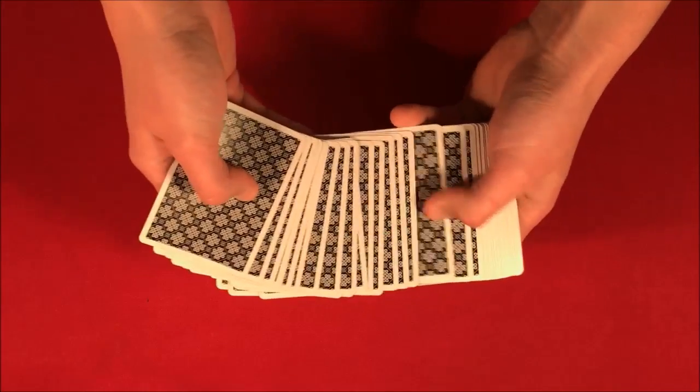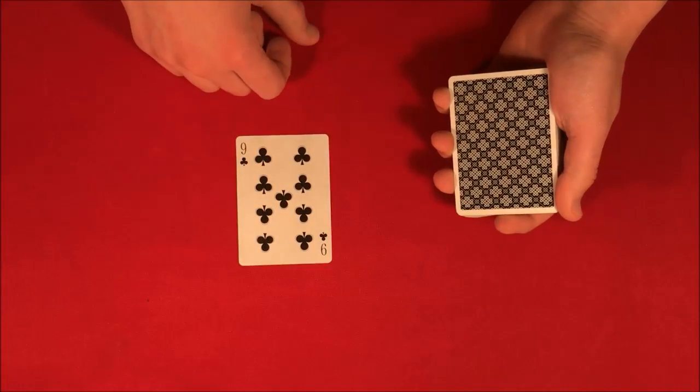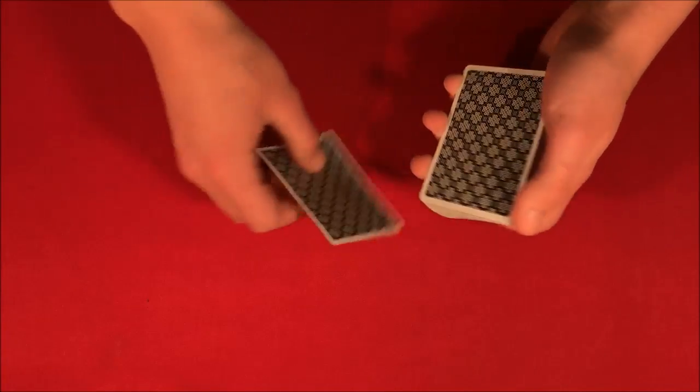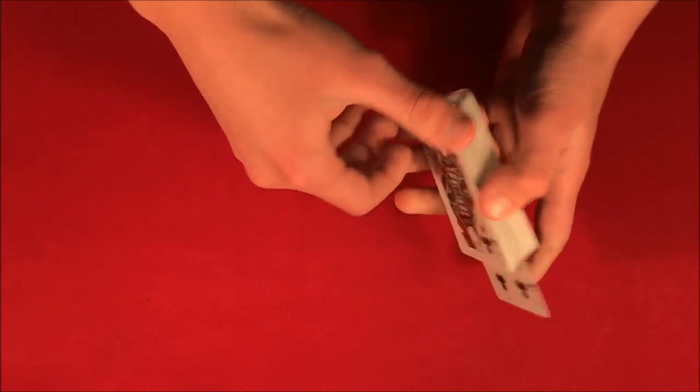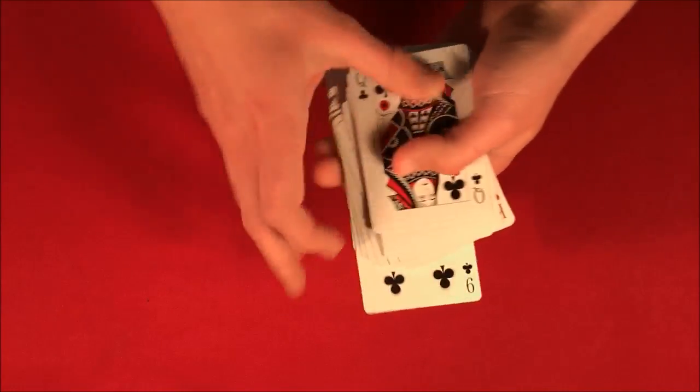So what you can do is have the spectator pick a random card from the deck. In this case let's say we have the nine of clubs. It is a random card and you show them, and you can put it in the middle of the deck. You're not kidding about that, the card is indeed in the middle of the deck and you show that to them.